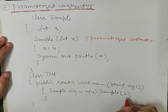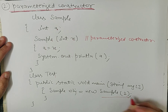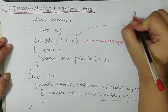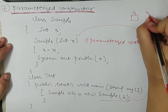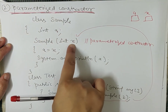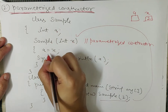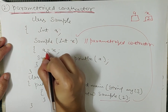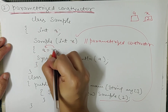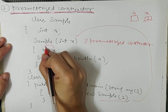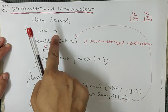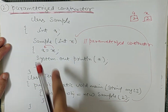So I passed the value 2. When the parameterized constructor is called, 2 will be passed into 'x'. Then 'a = x' assigns the value from right to left, so the value of x, which is 2, will be transferred to 'a'. That means 'a' now holds the value 2. This is how the constructor initializes the instance variable at the time of object creation.